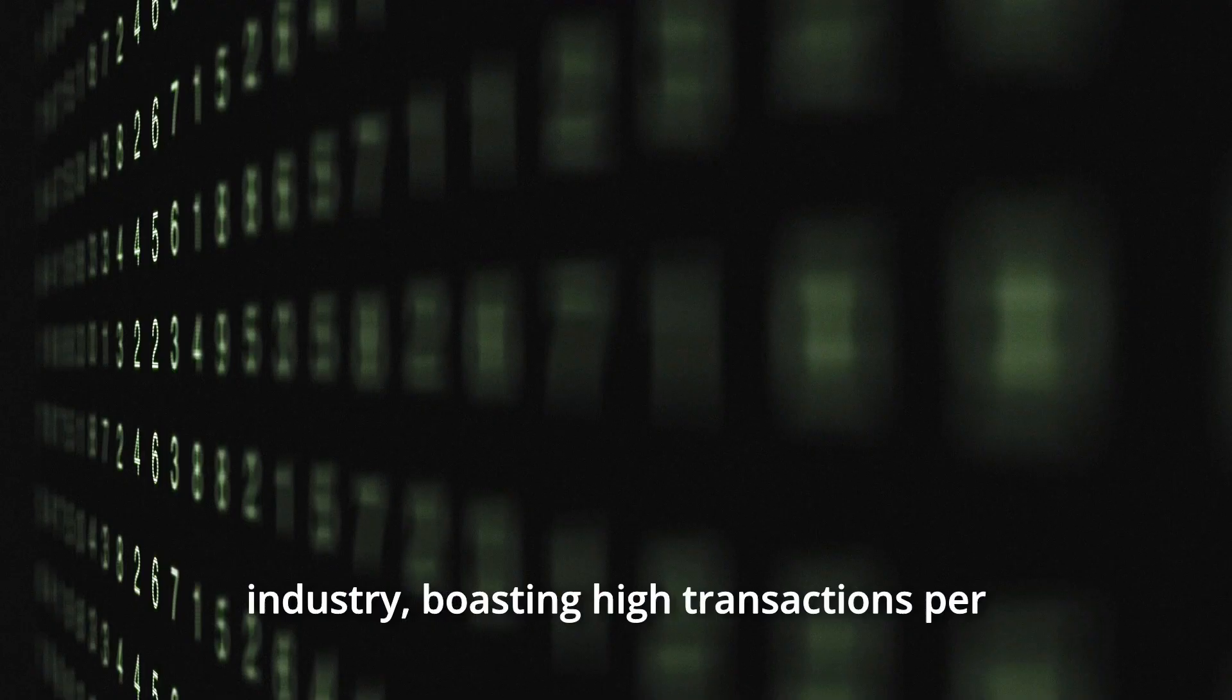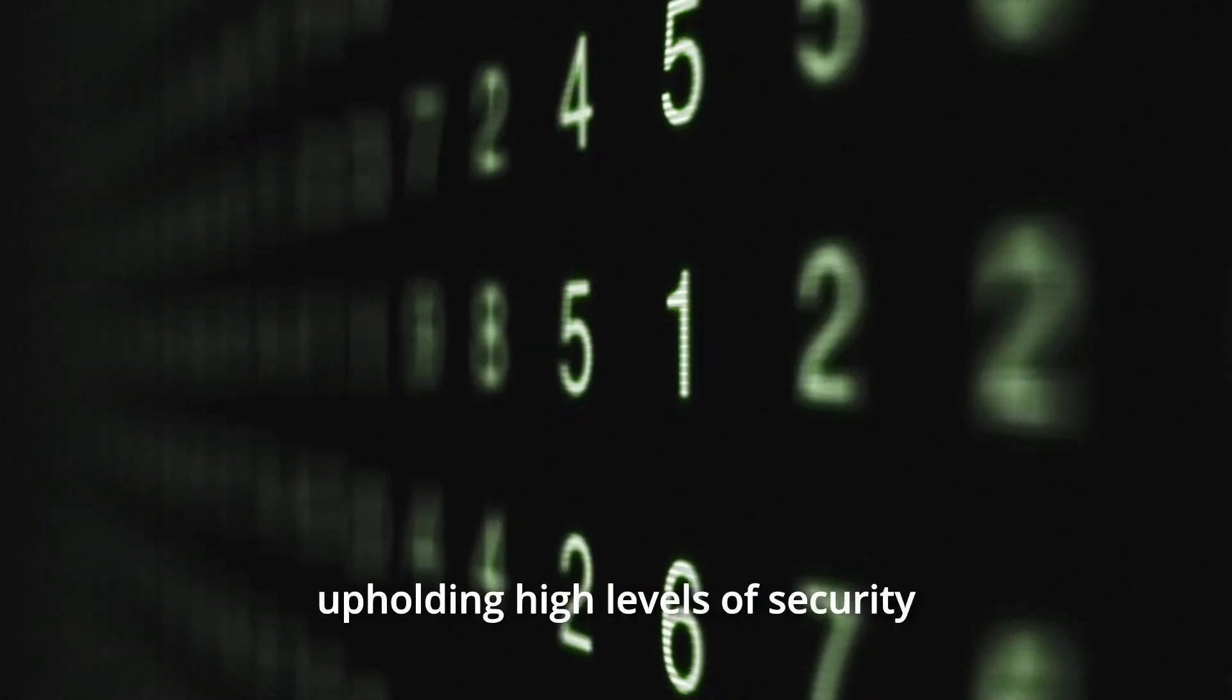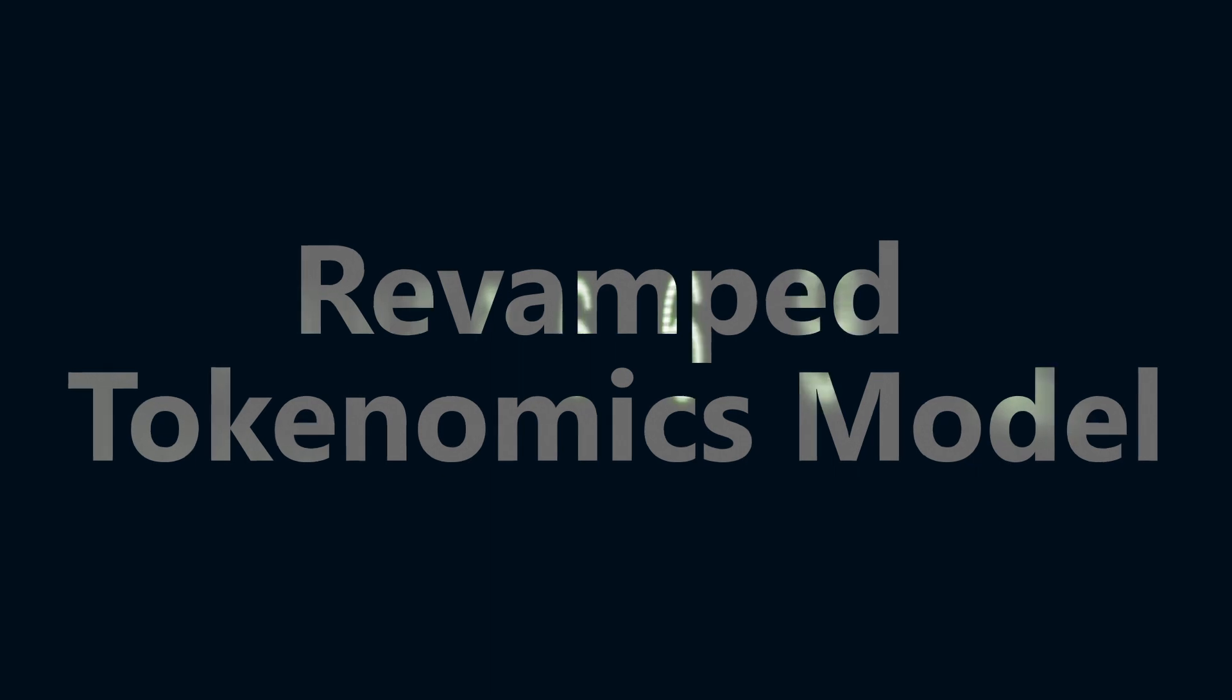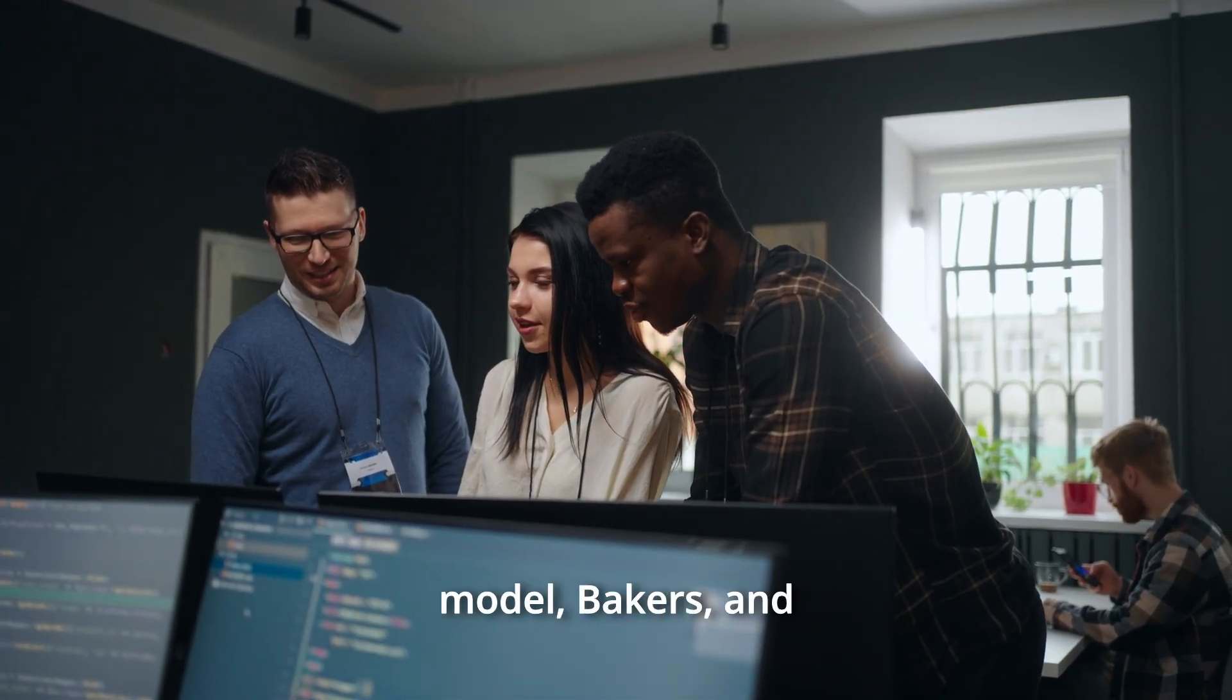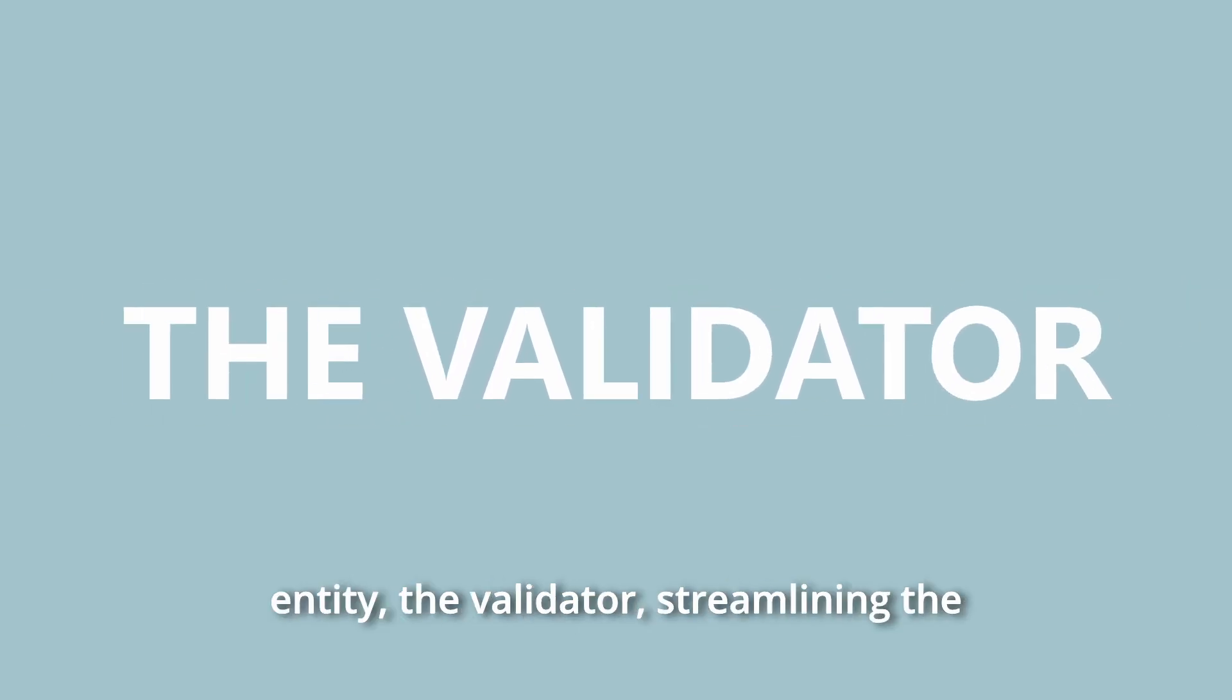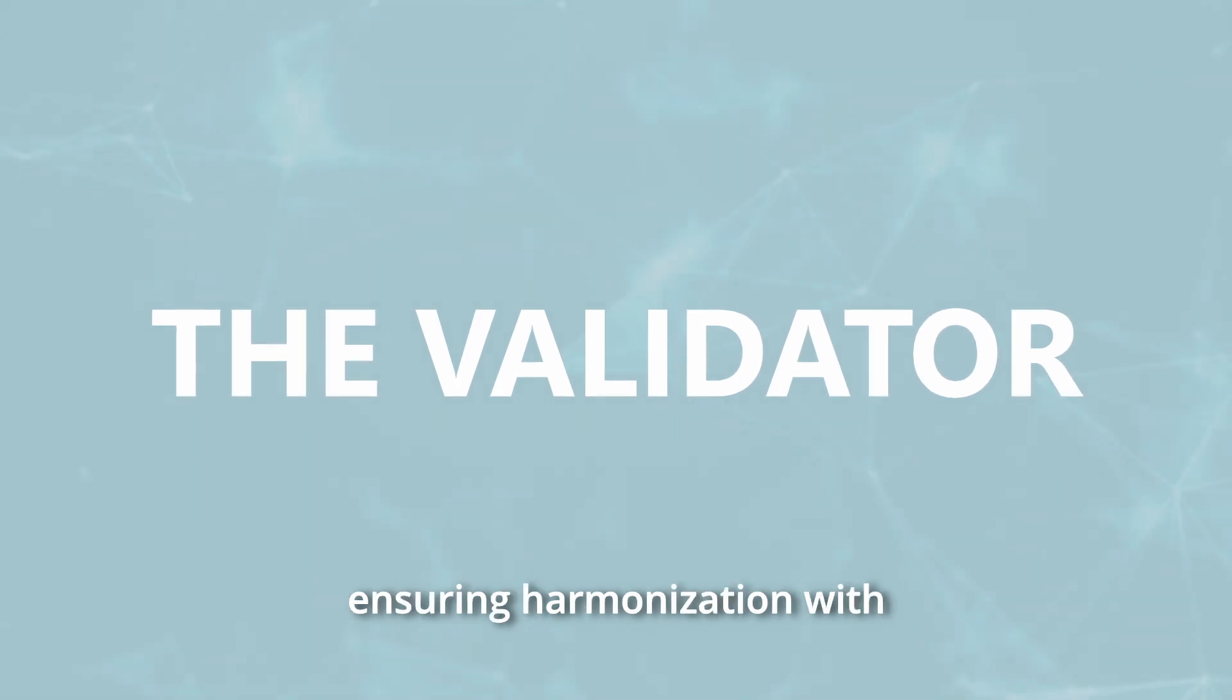These protocols boast high transactions per second (TPS) while upholding high levels of security and reliability. In Concordium's redesigned tokenomics model, bakers and finalizers amalgamate into a new entity called the validator, streamlining the tokenomics framework and ensuring harmonization with other blockchain networks.